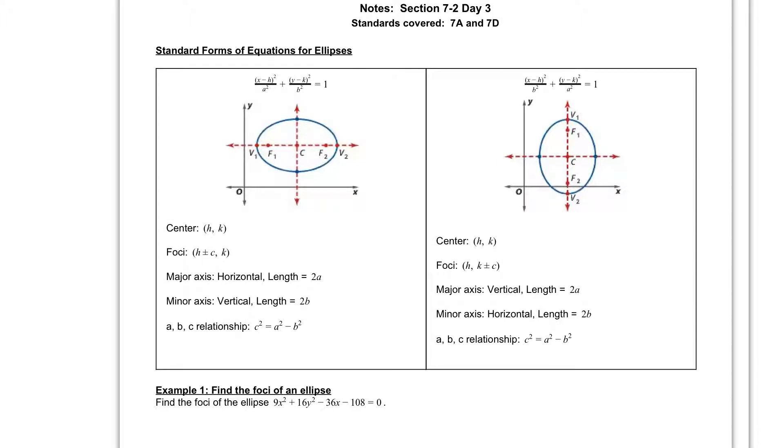our major axis was horizontal, and our minor axis was vertical. So that tells us that we are dealing with this first equation, major axis being horizontal and minor being vertical.